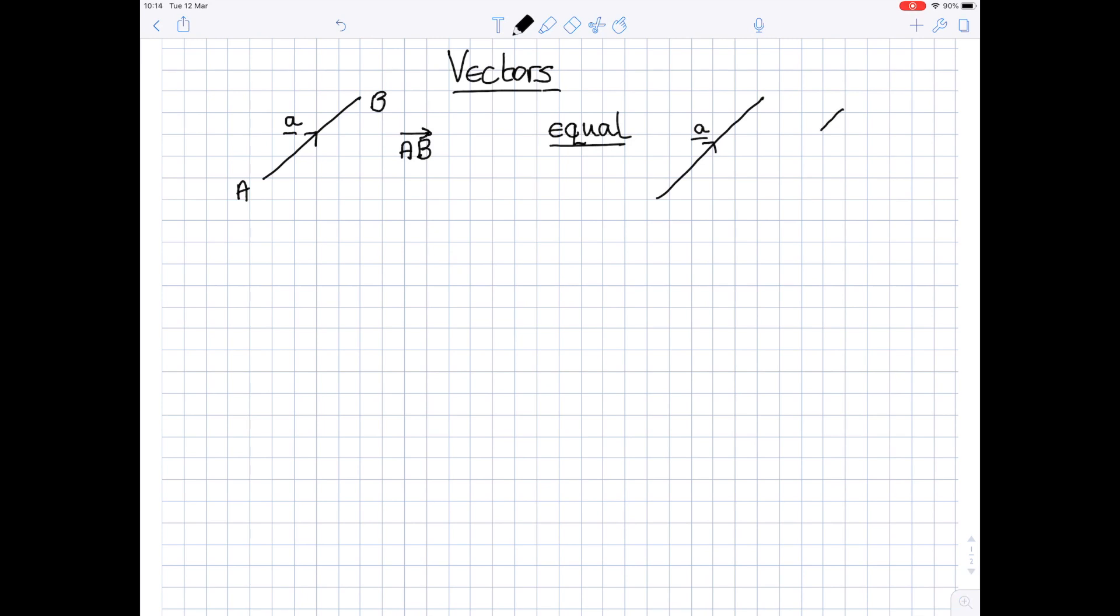If you have a parallel line which is the same length but going in the opposite direction, then that's the vector minus A. So equal vectors, parallel, same length, same direction. If they go in a different direction, then it's the negative of the original vector.